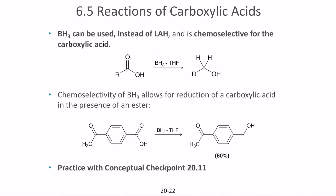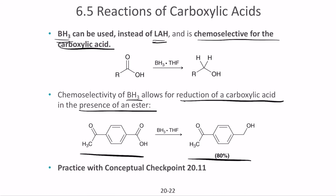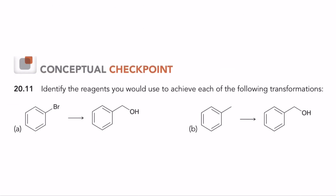Borohydride (BH3) can also be used instead of LAH, and is chemoselective for carboxylic acids — it selectively reduces the acid without affecting other parts of the structure. The chemoselectivity of BH3 allows reduction of a carboxylic acid in the presence of an ester using tetrahydrofuran. For the practice problem, first convert the bromo compound to an acid using a Grignard reaction, then from the acid to an aldehyde, and finally to the primary alcohol. Pause and solve.